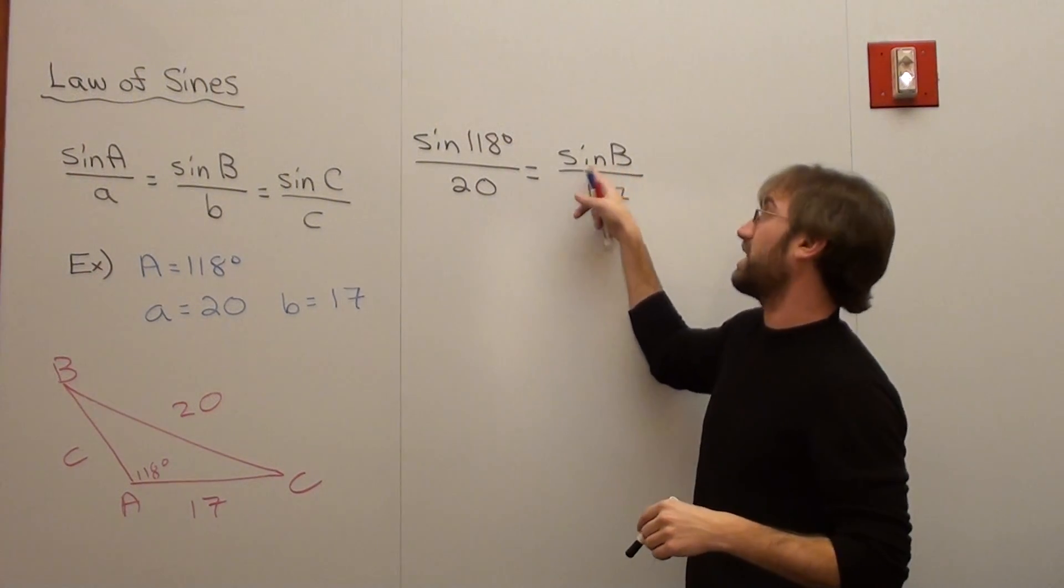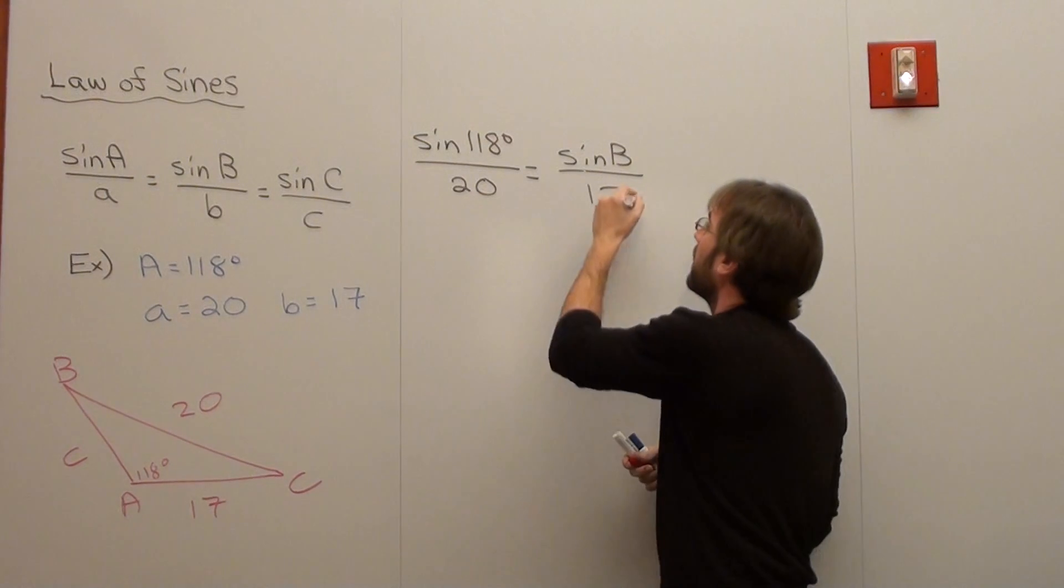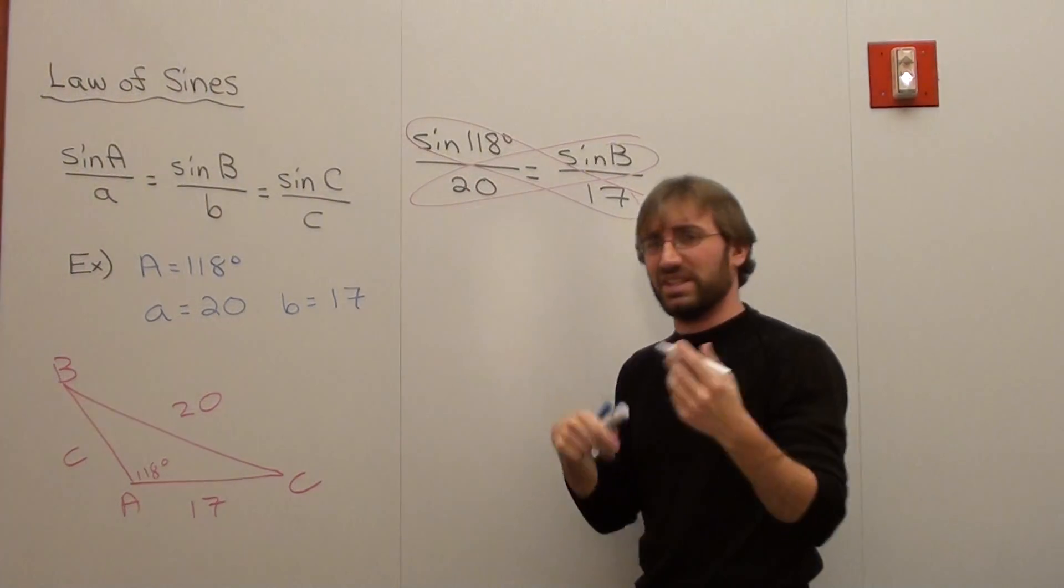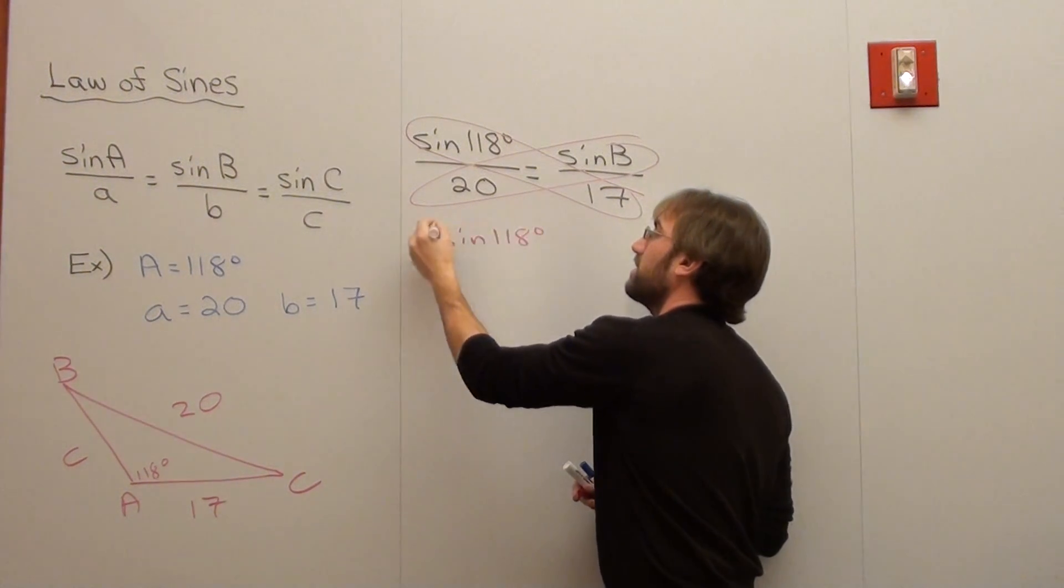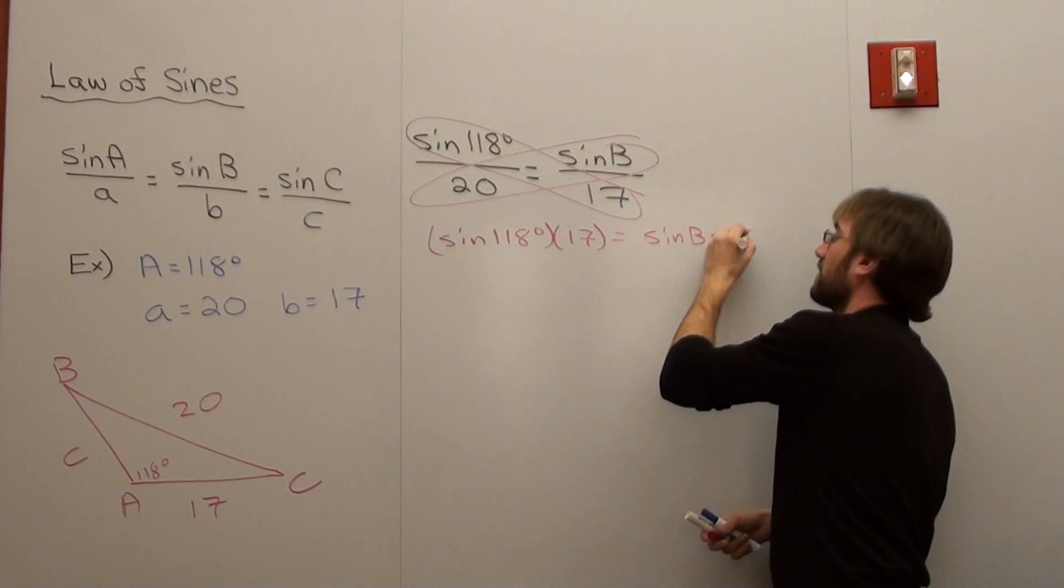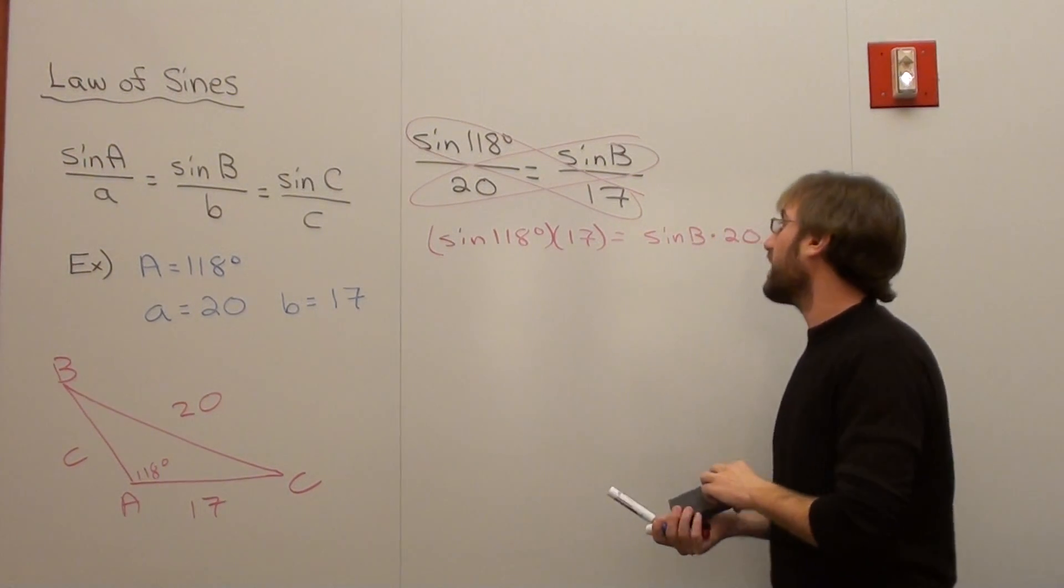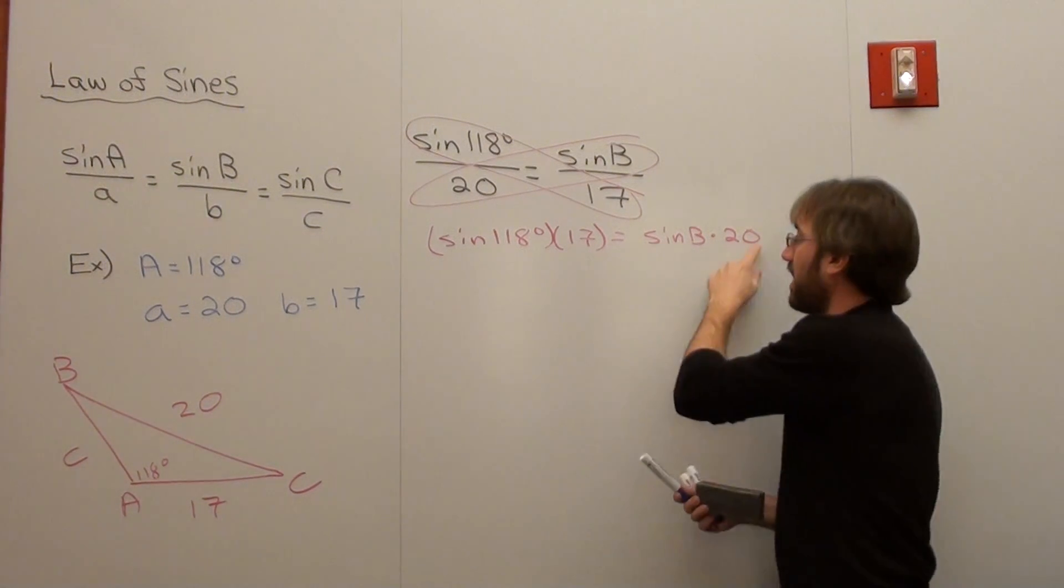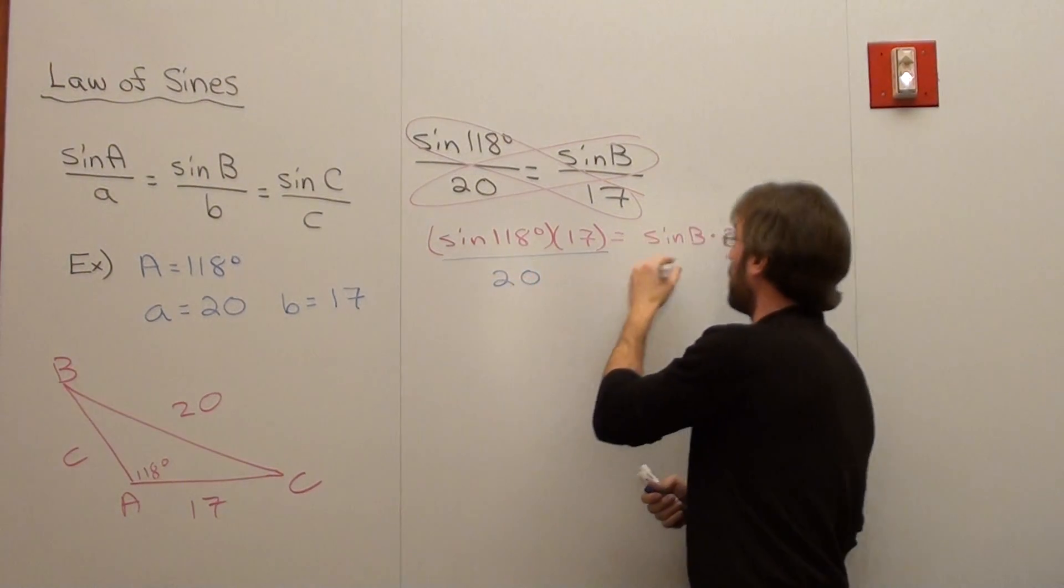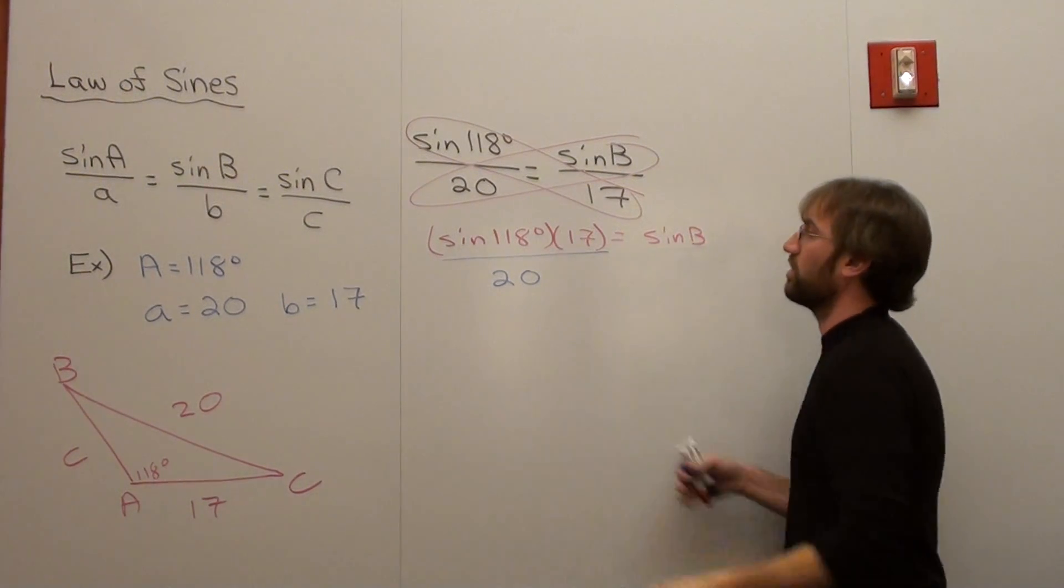How do I solve for B in this particular case, or sine of B? I've got to cross multiply. I can cross multiply because it's two fractions that are equal to each other. Simple algebra. And what I get is, it doesn't matter, you can put sine of 118 times 17 or 17 times sine of 118 first. I'm going to put sine of 118 degrees times 17 equals sine of B times 20. How do I get the sine of B by itself? I divide 20 on both sides. So sine of B equals whatever this is divided by 20.